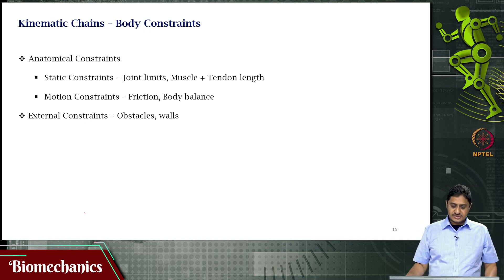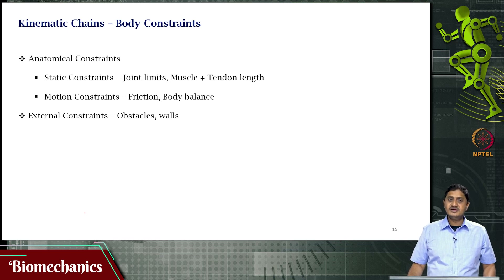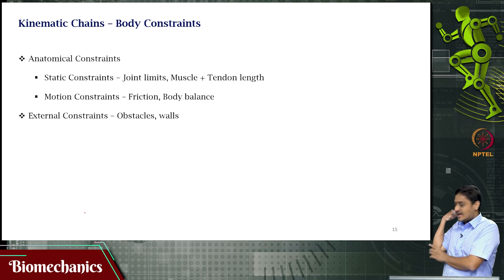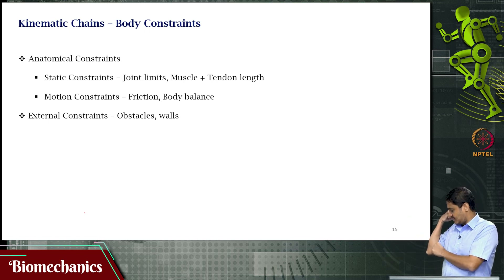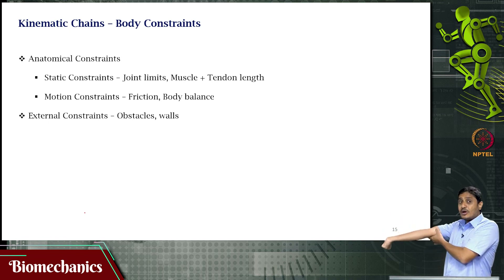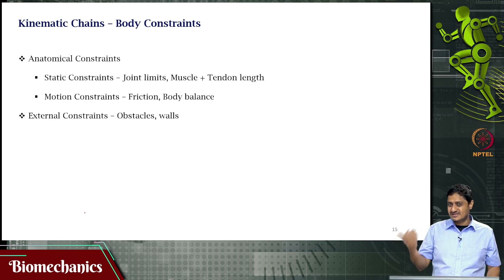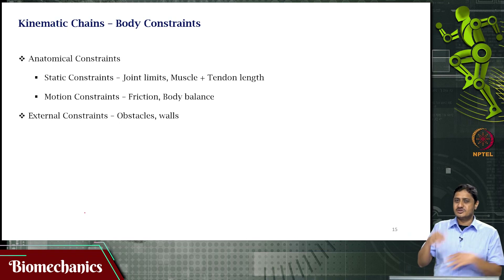There are also constraints imposed by the body itself — for example, limits within which a joint can move. The elbow joint can extend but not really hyperextend; the range of movement is between specific angles and not beyond. These are called joint limits, which are specific to the joint and to the person, and change as a function of age. In almost all cases, there is no hyperextension in the elbow joint.